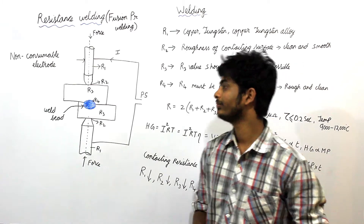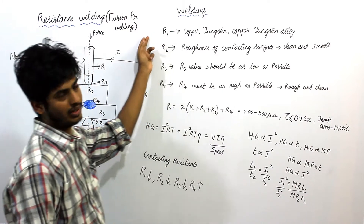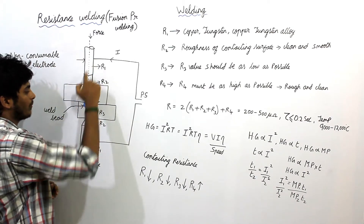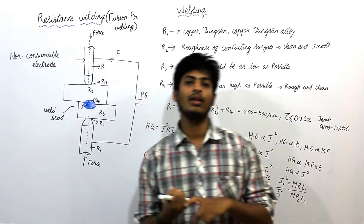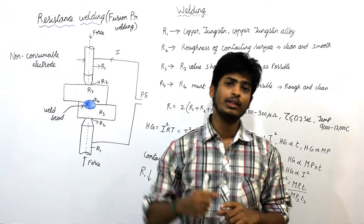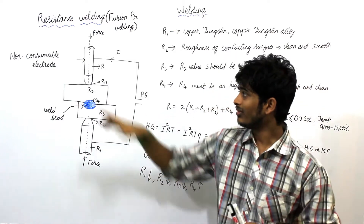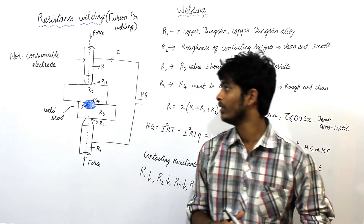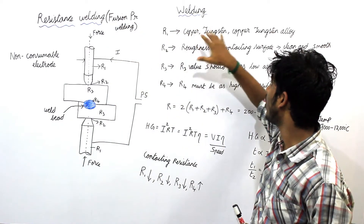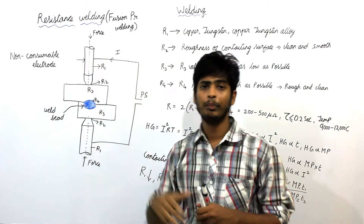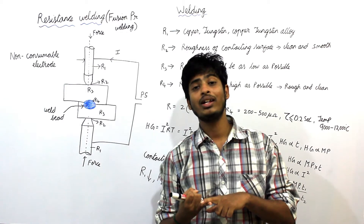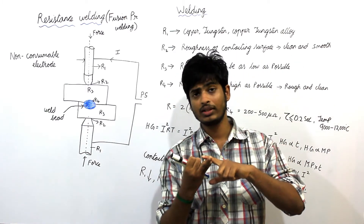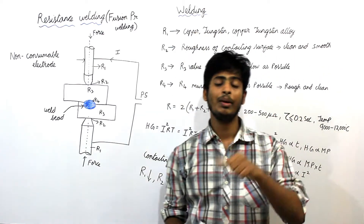In the resistance welding process we use four contacting resistances: R1, R2, R3, and R4. R1 is the contact resistance of the non-consumable electrode. There is a relationship between resistance and heat generation — if resistance is high, heat generation is also high. So R1 should be as low as possible to minimize heat generation at the electrode. For this, copper-tungsten or copper-tungsten alloy materials are used, as they have very low electrical resistivity.